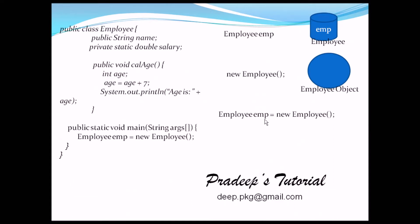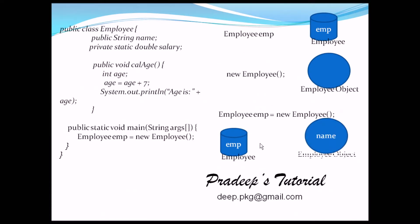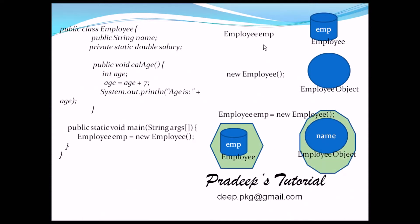When I write 'new Employee', it actually creates an object in the heap. When I do 'Employee emp = new Employee', I am assigning an object to a reference. Here is our stack memory and here is our heap memory. When you create a reference, it goes to the stack memory. When you create an object with 'new Employee', that goes to heap memory. Remember: the object is only created when you do 'new Employee' — the reference emp is then assigned to point to that object.